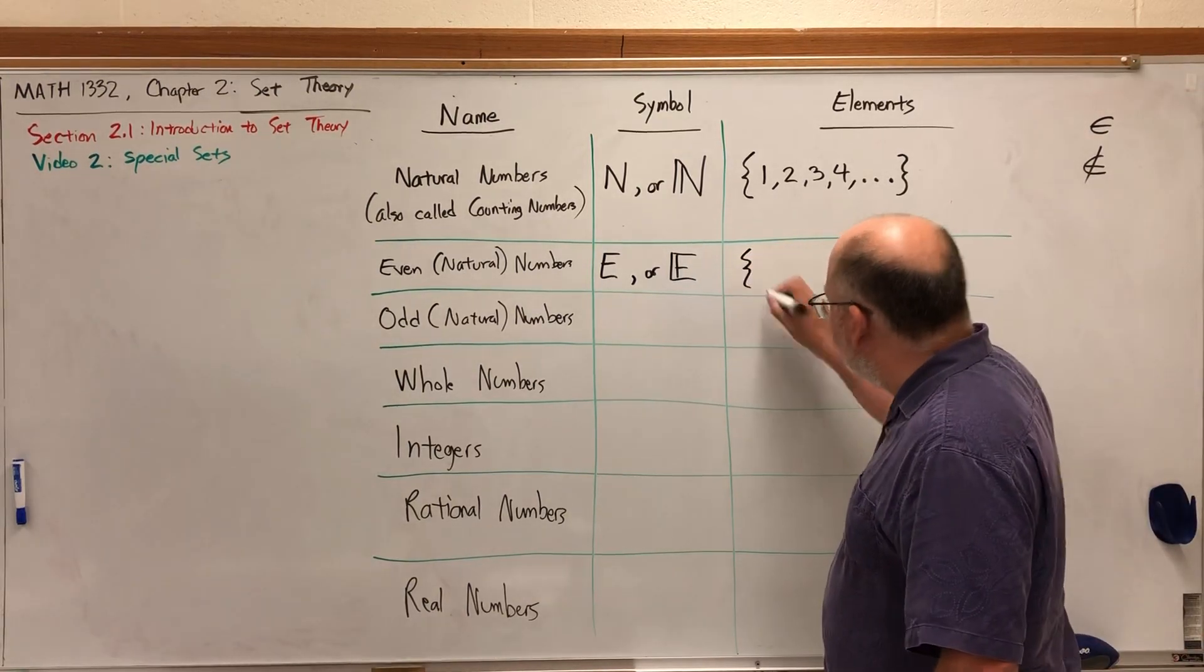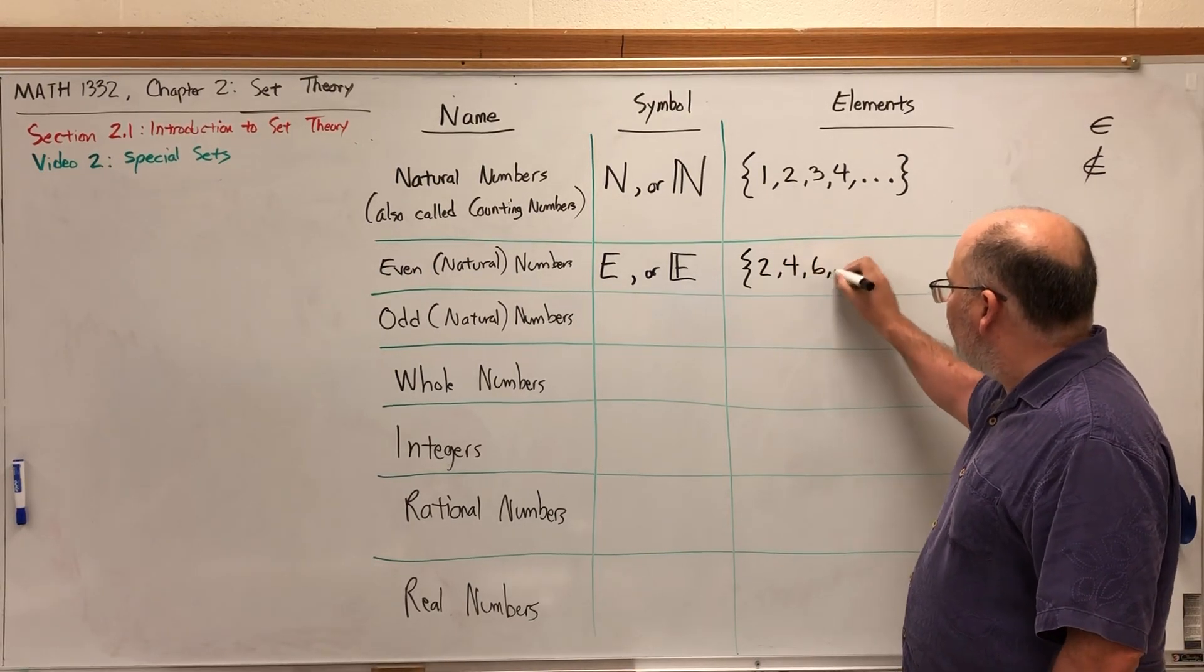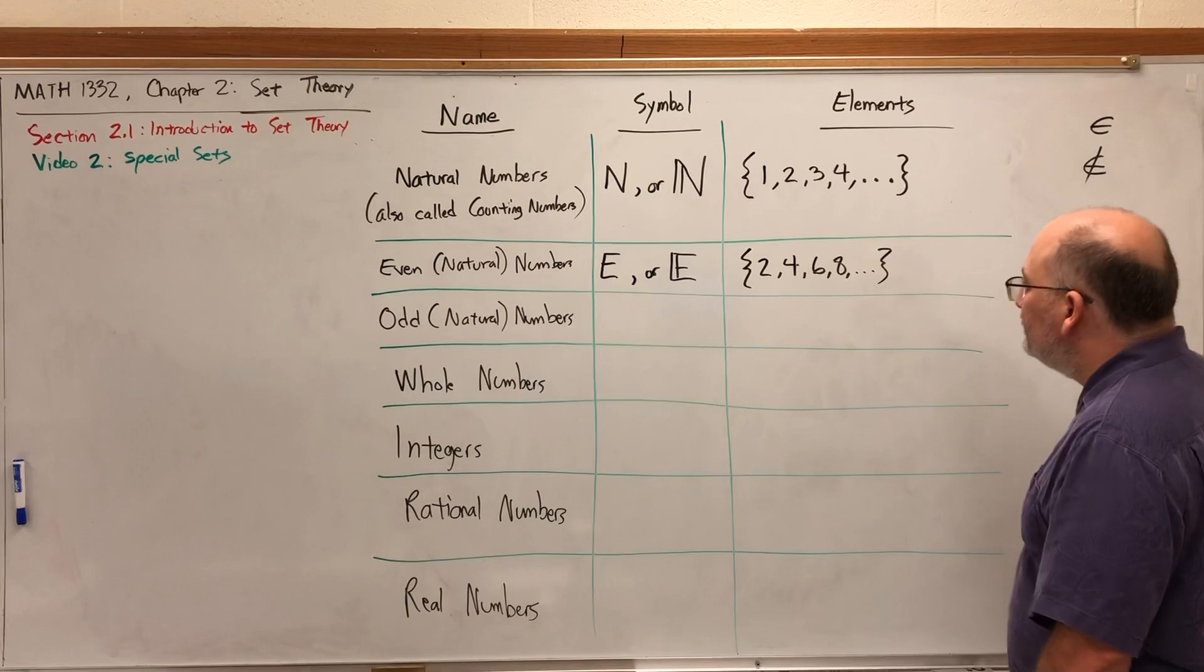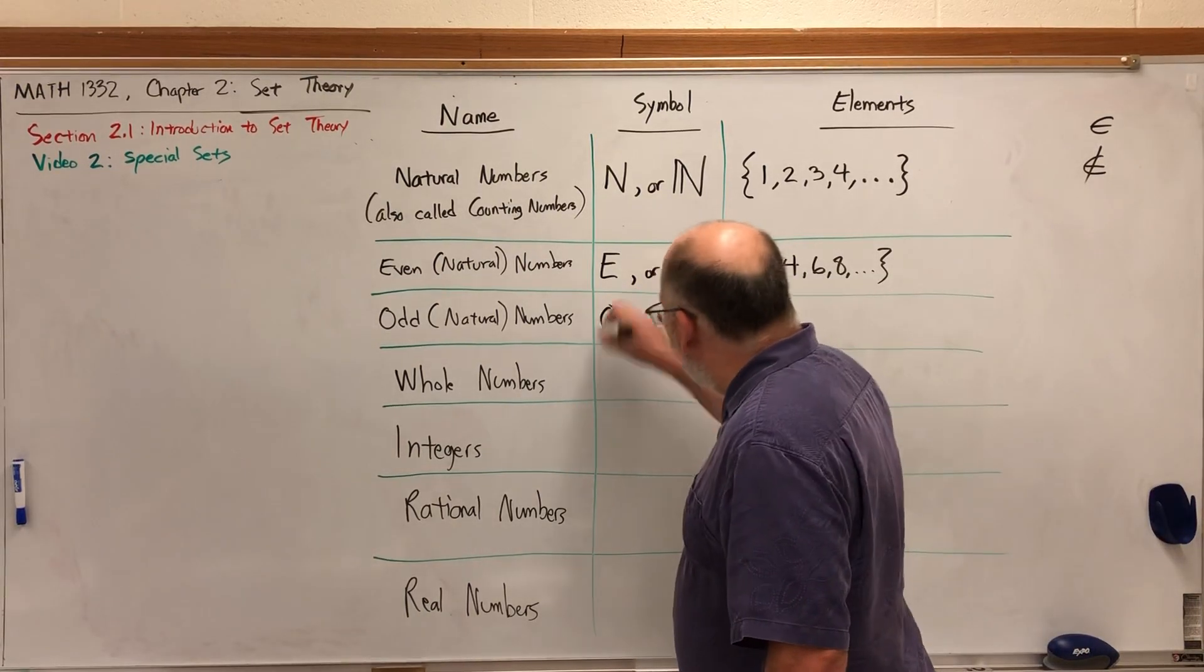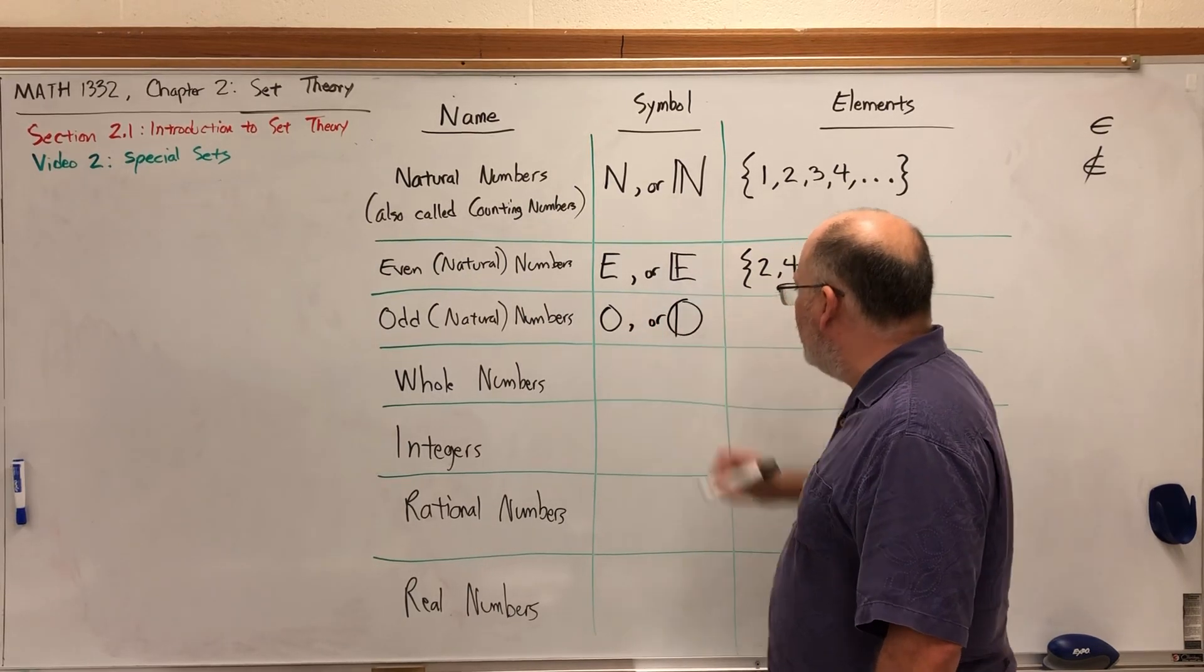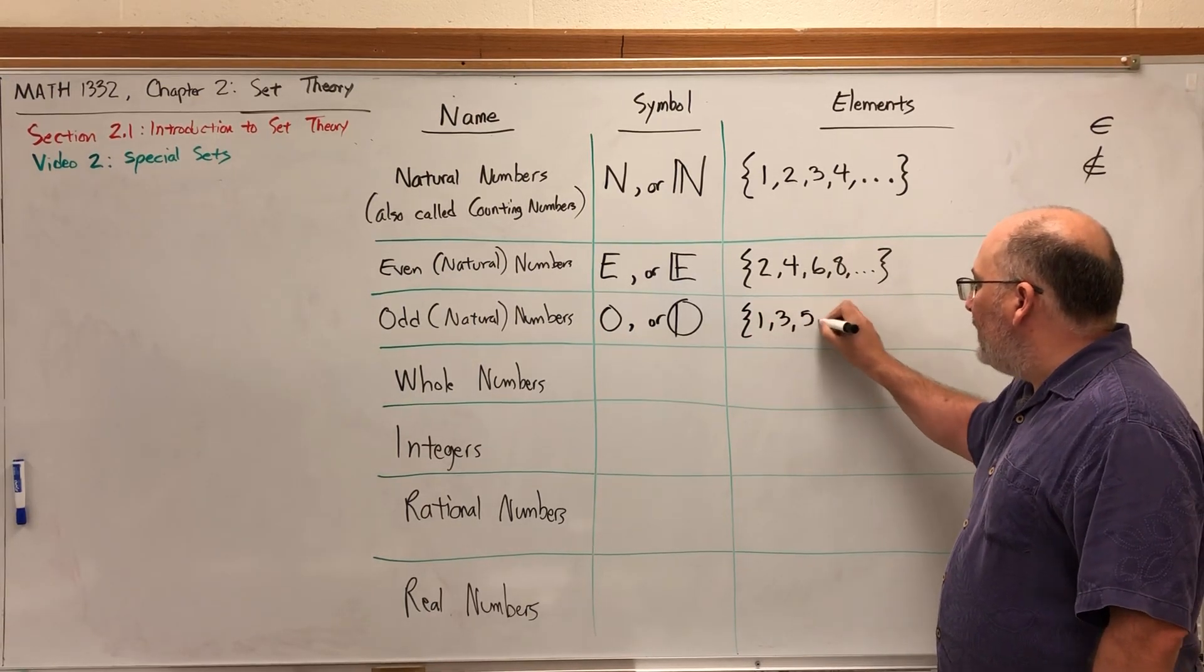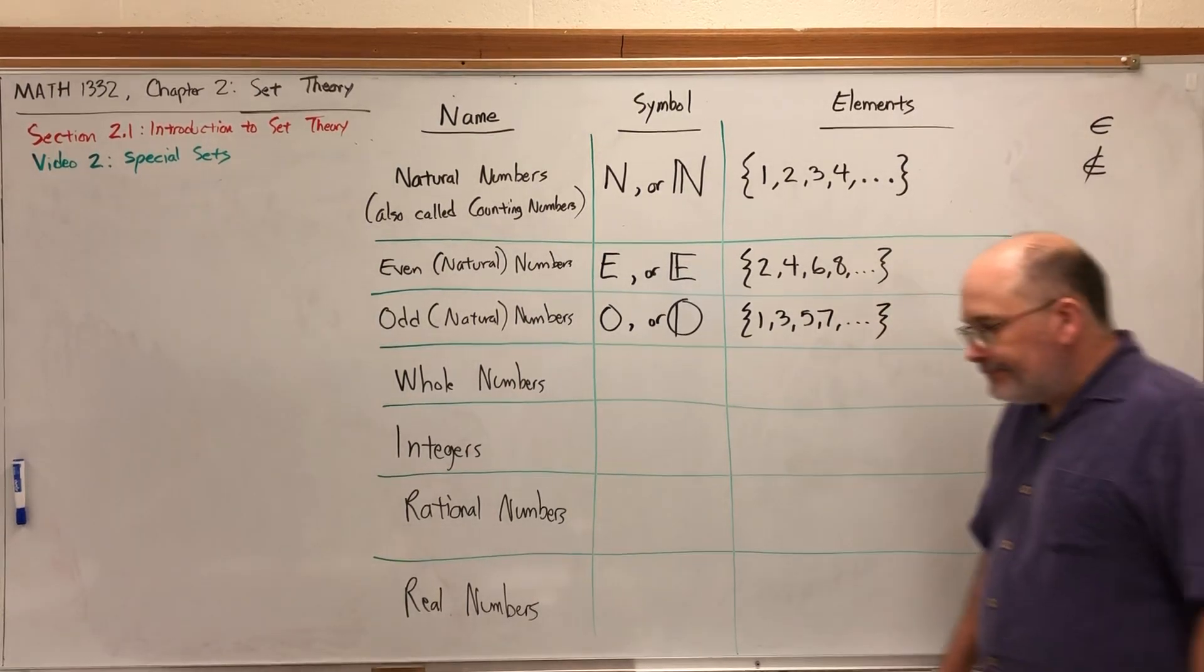They're the numbers two, four, six, eight. We could also describe them as all natural numbers that are divisible by two. The odd natural numbers can be represented with a capital O or a double script O. They are the natural numbers one, three, five, seven, and so on.